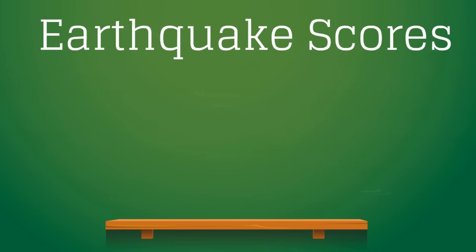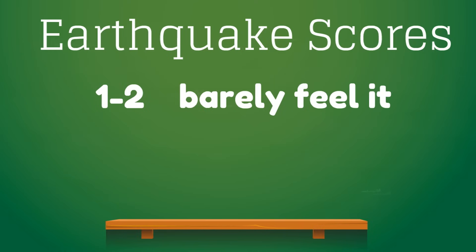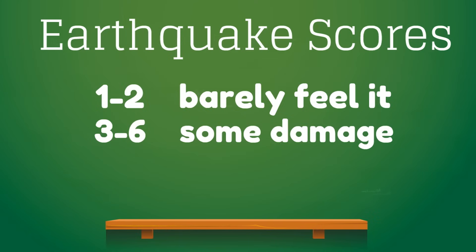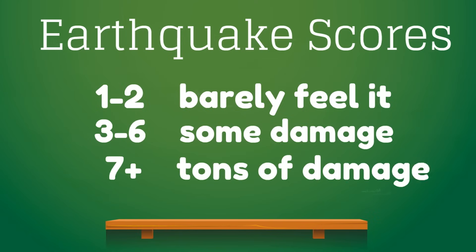Here are some common earthquake scores: a one or two earthquake — you barely feel it. In the three to six range, there's going to be some damage. But seven or higher? That's a massive earthquake and there's going to be tons of damage.